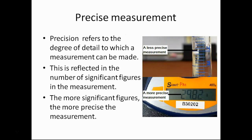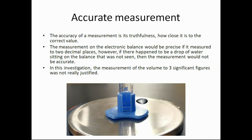Precision is another word to understand when it comes to measurements and experiments. Precision refers to the degree of detail that we can measure. It's reflected in the number of significant figures. The more significant figures, the more precise the measurement. The accuracy of a measurement is its truthfulness, how close it is to the correct value. The measurement on the electronic balance would be precise if it measured to two decimal places. However, if there happened to be a drop of water sitting on the balance that was not seen, then the measurement of the volume would not be accurate. In this investigation, the measurements of the volume to two significant figures was not really justified. So I hope this was helpful in helping you to write and understand how experimental reports are written.